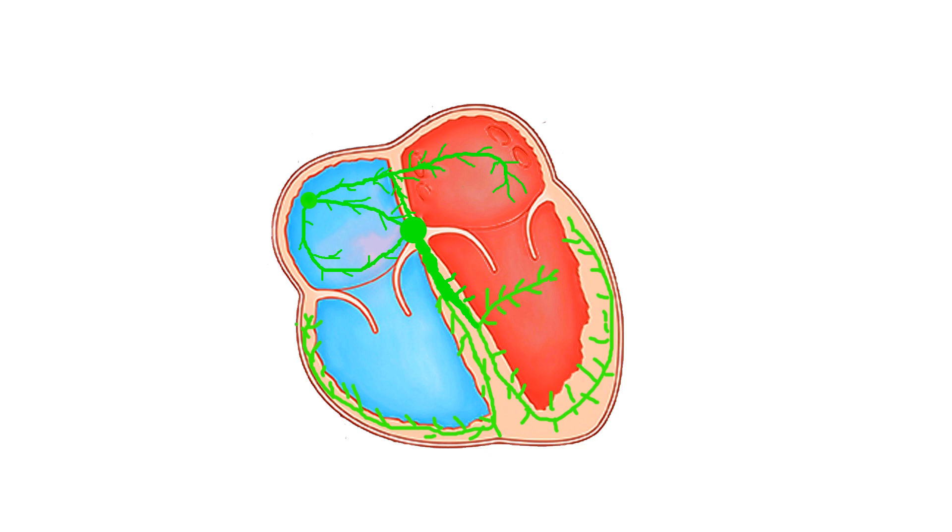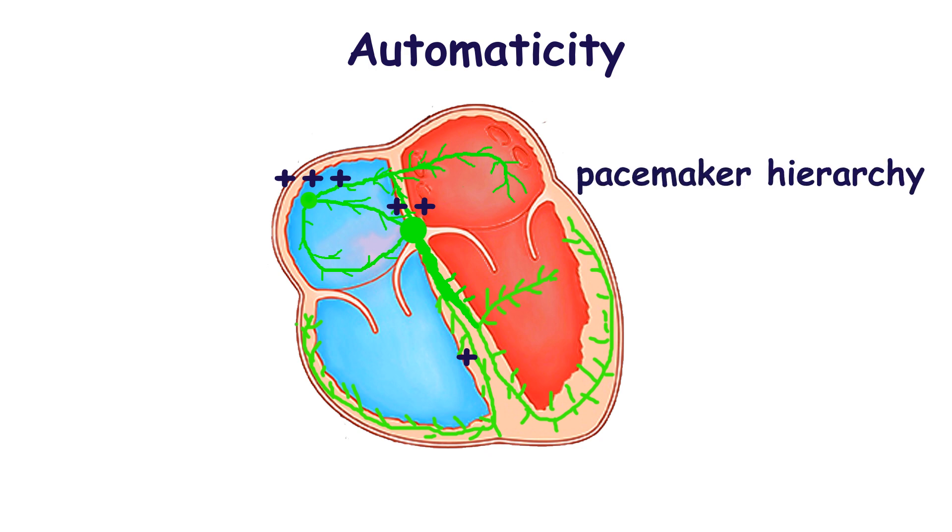We see that automaticity diminishes gradually with distance from the sinoatrial node. Such a decline in automaticity is called pacemaker hierarchy of the heart. If a pacemaker upper in this hierarchy fails to create an impulse, a pacemaker lower in this hierarchy begins to function.